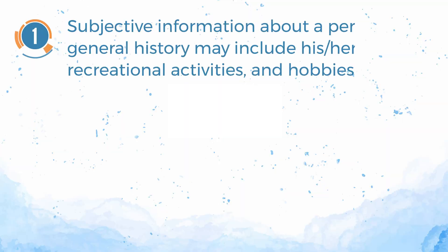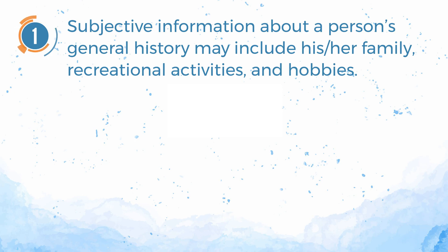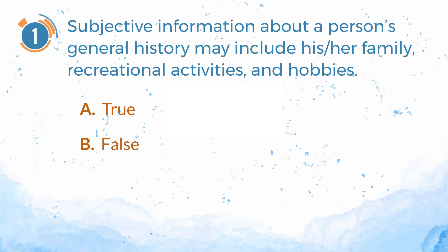Number 1. Subjective information about a person's general history may include his or her family, recreational activities, and hobbies. A. True. B. False. The answer is B. False.